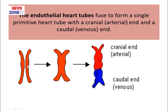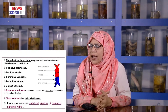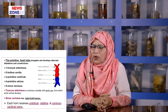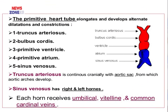The two endocardial tubes fuse and ultimately form a single tube with two ends: the cranial end is the arterial outflow tract and the caudal end is the venous inflow tract. As the primitive heart tube elongates, it develops alternate dilations and constrictions. From cephalic to caudal the parts are: truncus arteriosus, bulbus cordis, primitive ventricle, primitive atria, and sinus venosus.